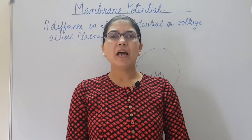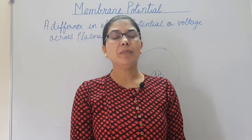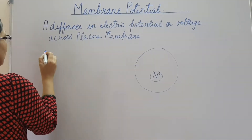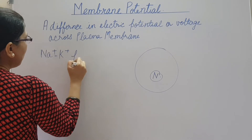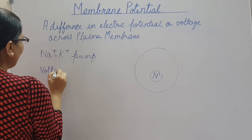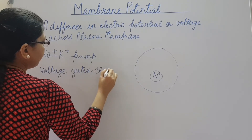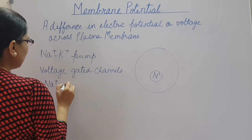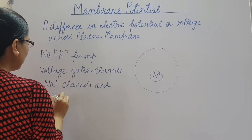We know that in the plasma membrane, in addition to the phospholipid bilayer, membrane proteins are also present. Some of the membrane proteins are transport proteins. The two transport proteins important for the establishment of membrane potential are the sodium-potassium pump and voltage-gated channels — most importantly, voltage-gated sodium channels and voltage-gated potassium channels.